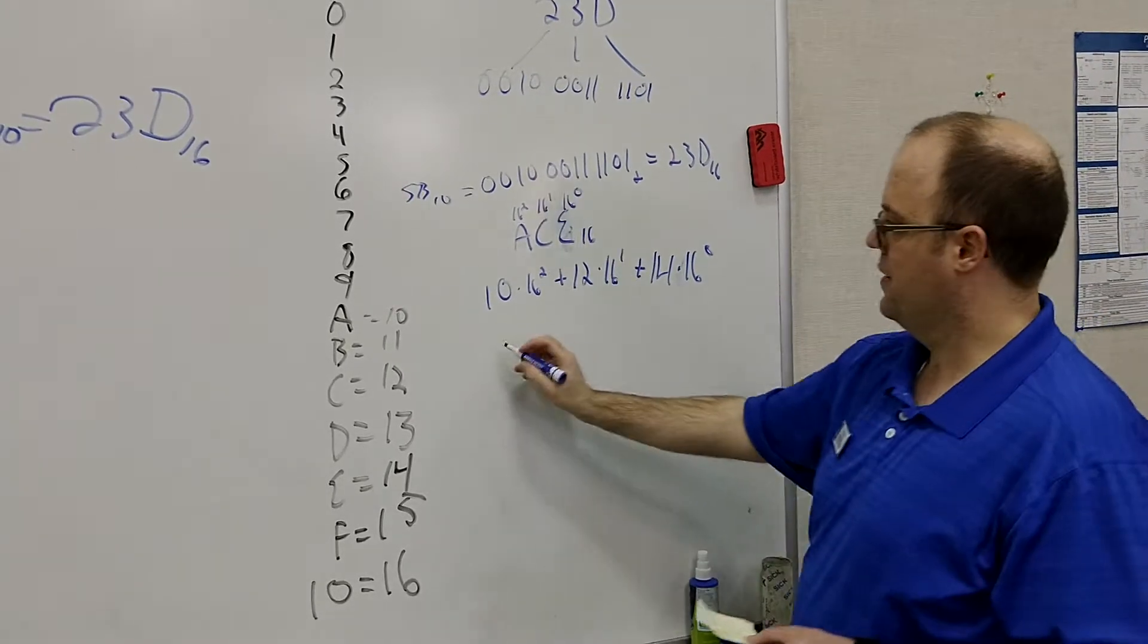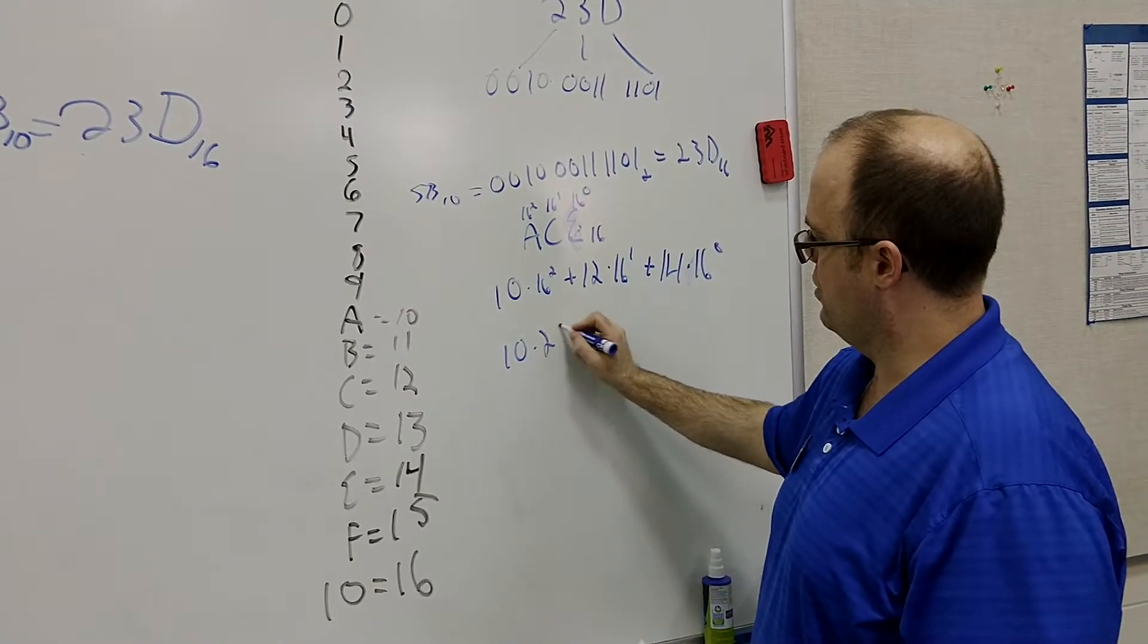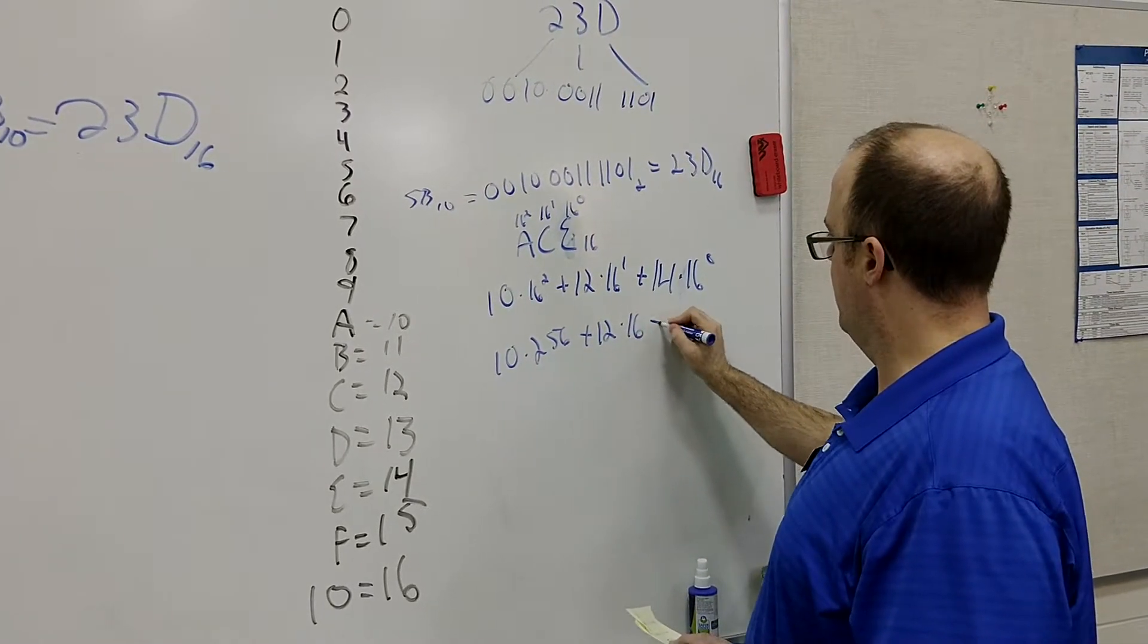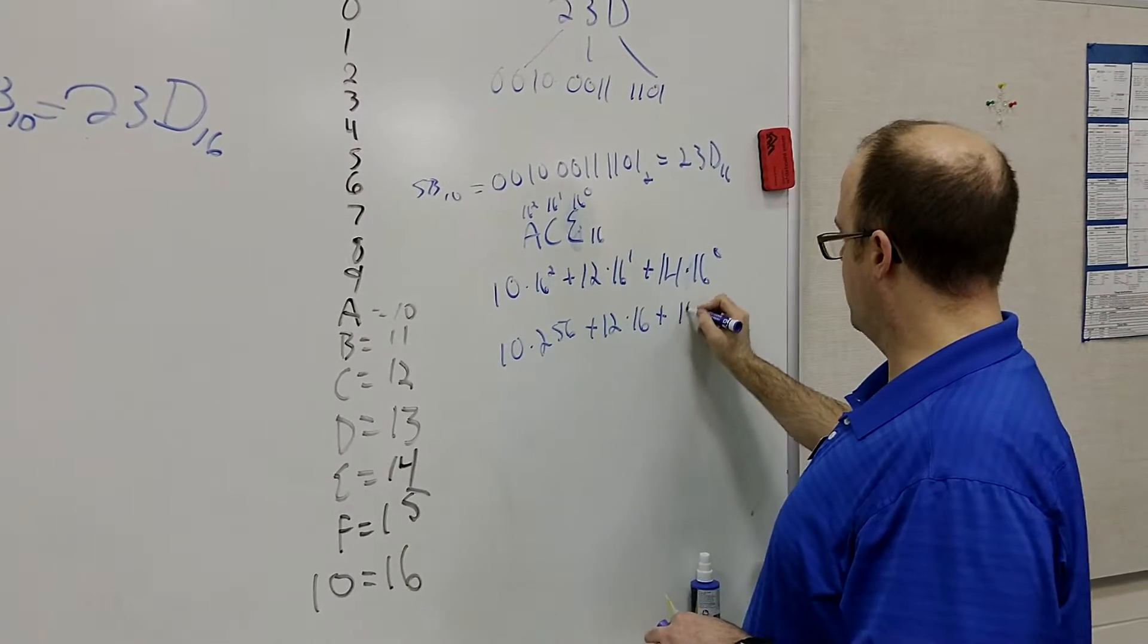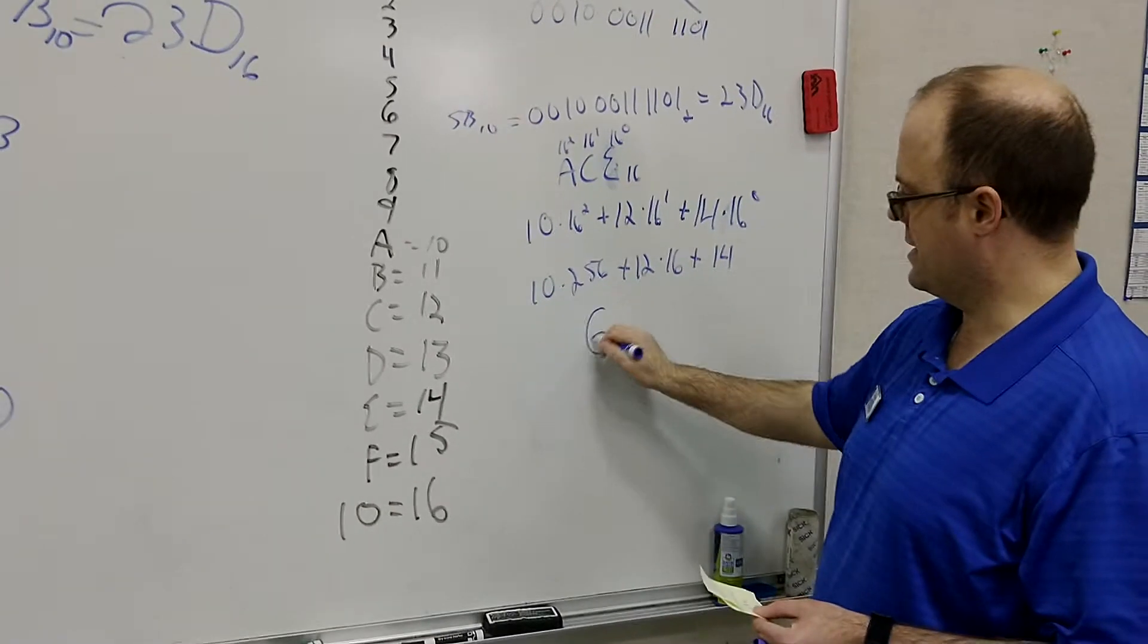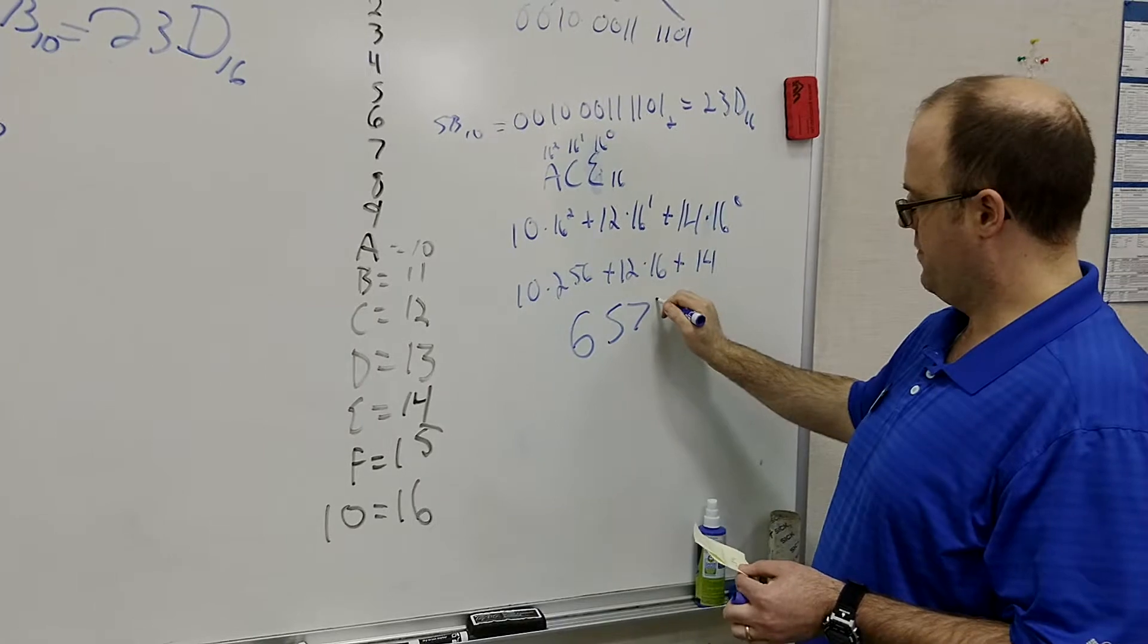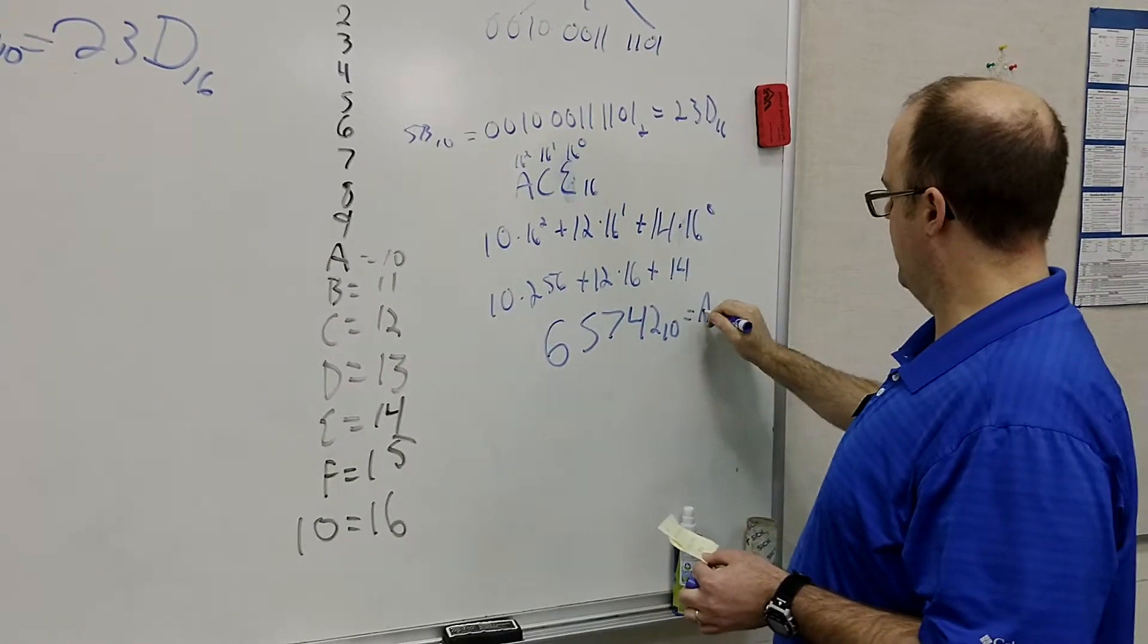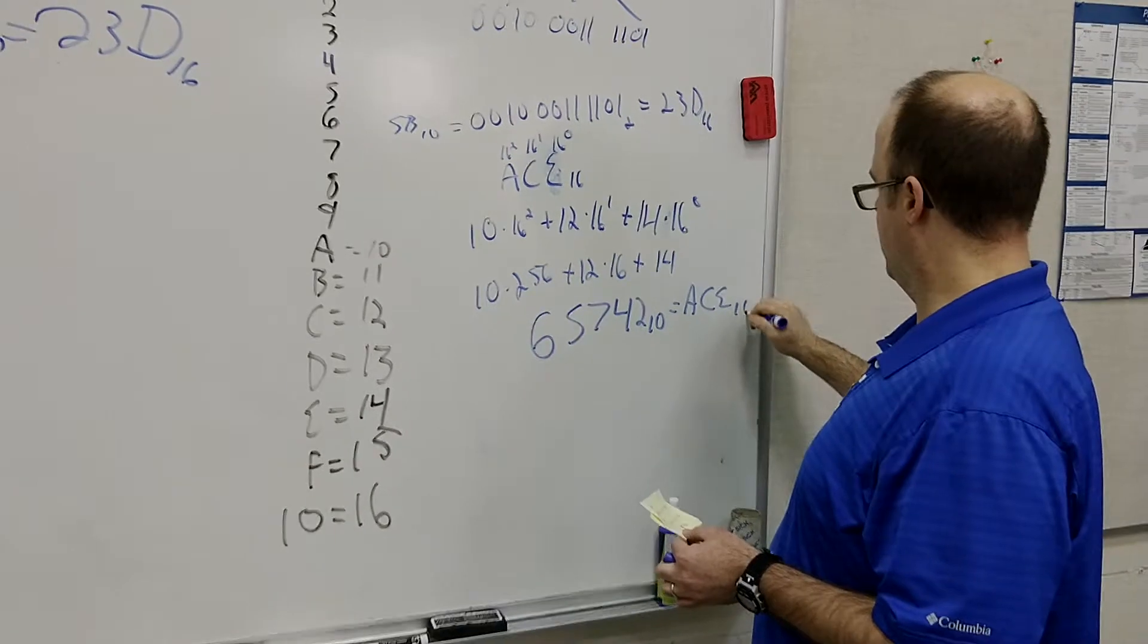And if I simplify that, that will be 10 times 256 plus 12 times 16 plus 14. Do the multiplication, add together, and you should get 2766 base 10 equals ACE base 16.